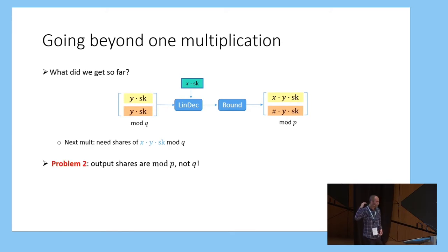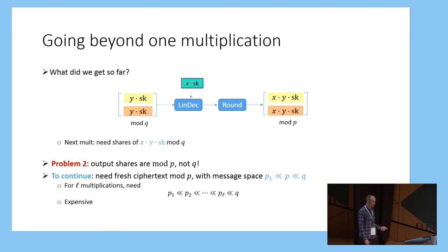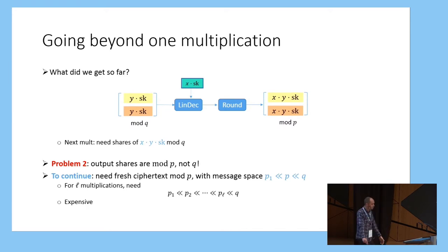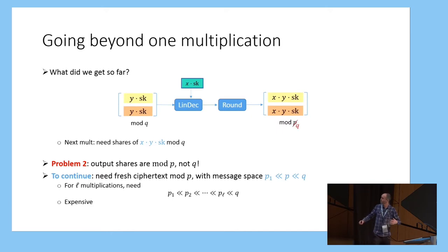But this is not quite enough to keep going. The problem is after doing the rounding step we took the shares modulo q and brought them down to modulo p, and this seems incompatible with the previous multiplication where we required shares starting at mod q. One thing we can do at this point to do another multiplication is take a different encryption scheme which has a ciphertext space modulo p and encrypts messages at a much smaller level modulo p1 smaller than p, and continue at the smaller level. But if we want to do several multiplications we need some kind of level scheme with a whole chain of decreasing moduli where the gap between each pair of moduli has to be superpolynomial for the rounding trick to work, and this is clearly not going to be practical beyond a few multiplications.